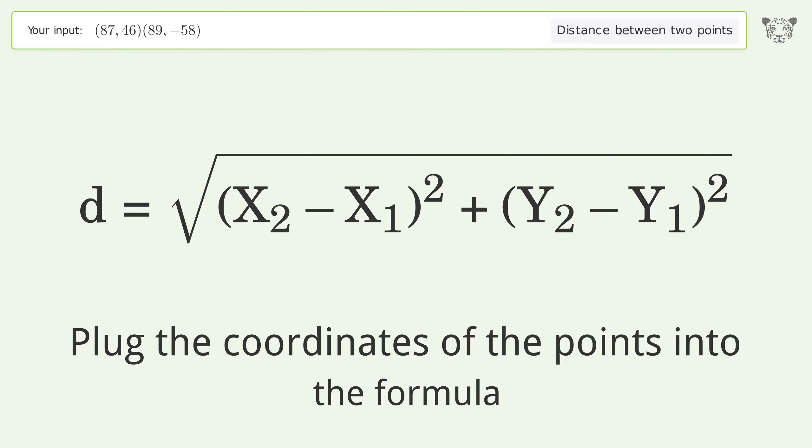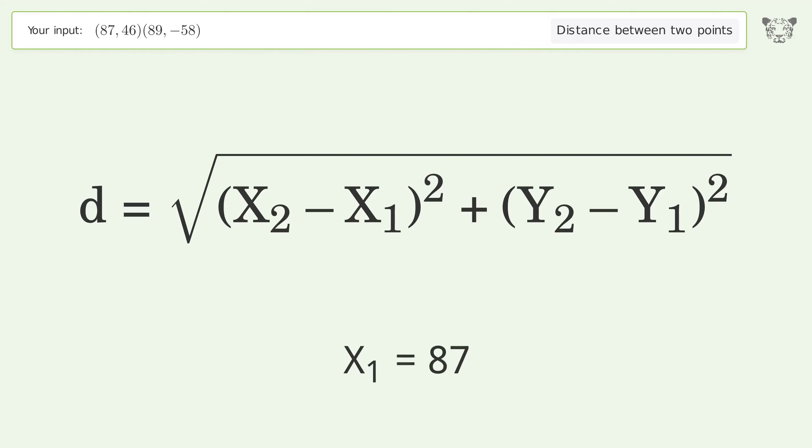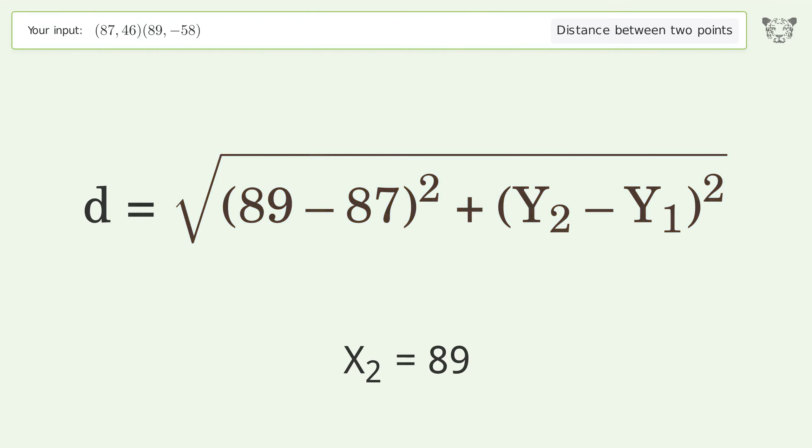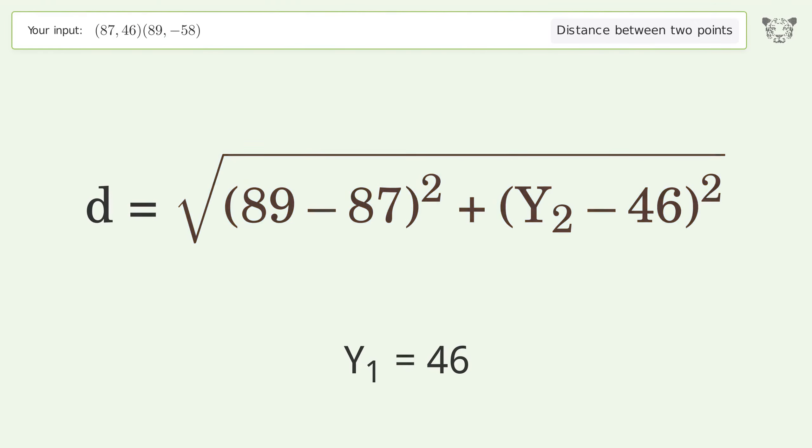x1 equals 87, x2 equals 89, y1 equals 46, y2 equals negative 58.